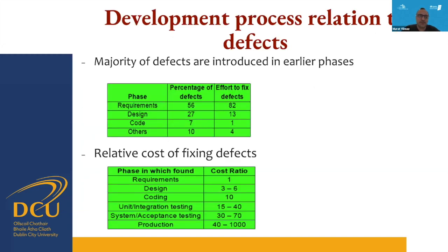Looking at the development process with respect to defects — the majority of defects are introduced in earlier phases. If you look at the phases of requirements, design, code and others, you can see that the effort to fix defects becomes enormously higher as you progress further through production. Defects are introduced unintentionally most of the time in the earlier phases, but the relative cost of fixing them increases dramatically from requirements through design, coding, and on to production.